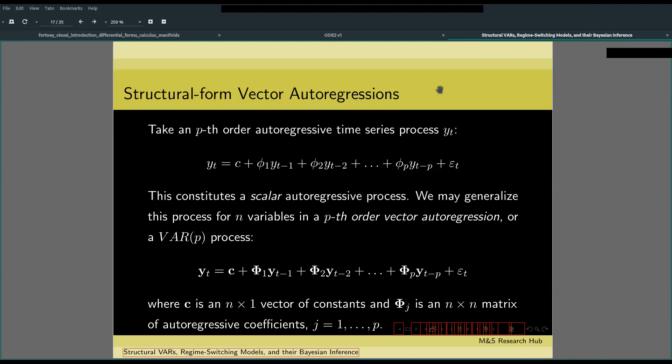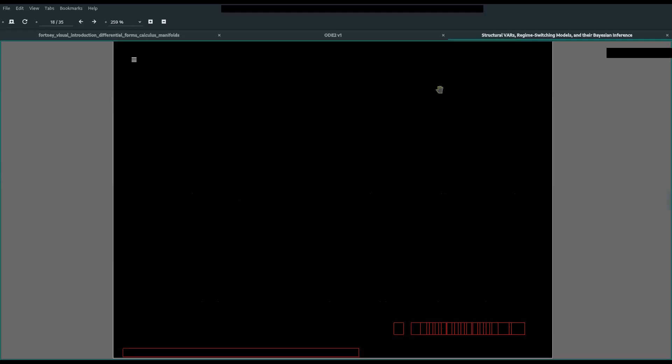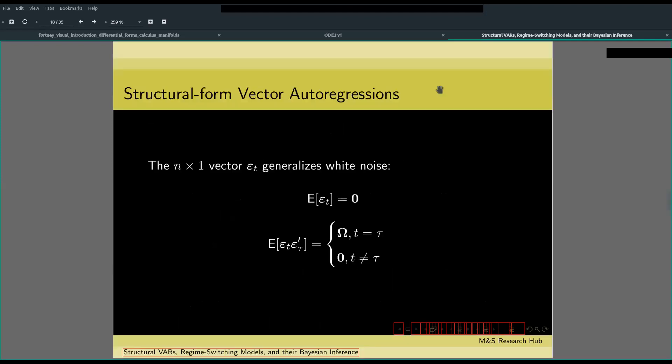Generalizing this process for n dependent variables gives us an order p vector autoregression process. And here is how the error term is defined.